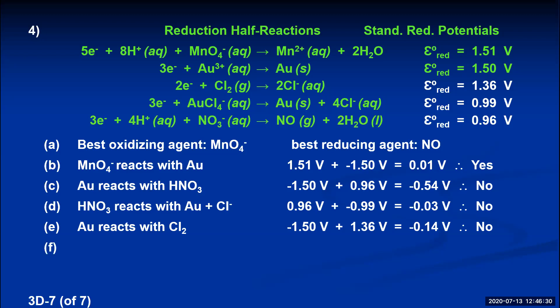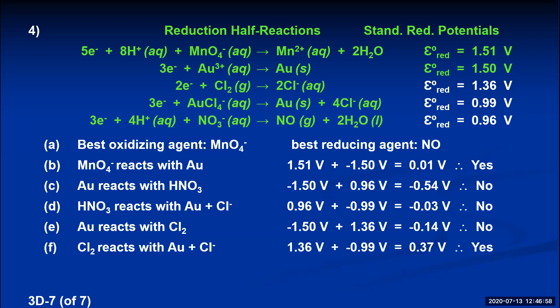Part F: will chlorine oxidize metallic gold if chloride ions are present? Translating: will chlorine react with metallic gold when chloride ions are present? The chlorine reaction is the third reaction, already on the reactant side — 1.36 volts. Gold with chloride ions is in the fourth reaction on the product side; reverse it to make them reactants — voltage becomes negative 0.99. Adding 1.36 and negative 0.99 gives a positive voltage, so this reaction is spontaneous. Therefore, chlorine will oxidize metallic gold if chloride ions are present.